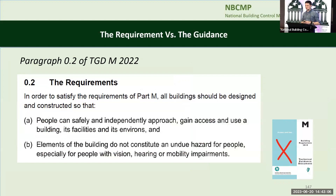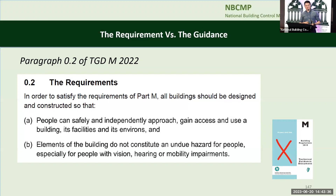Paragraph 0.2 of Technical Guidance Document M is probably the best guidance in the whole document and it's at the very start. To satisfy the requirements of Part M, all buildings should be designed and constructed so that people can safely and independently approach, gain access, and use a building, its facilities, and its environs. And elements of the building do not constitute an undue hazard for people, especially for people with vision, hearing, or mobility impairments. But again — the technical guidance documents are not the regulations, they're just guidance documents.